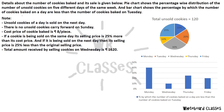What have you been told in this question? Details about the number of cookies baked and their sale is given. The pie chart shows the percentage-wise distribution of the number of unsold cookies on 5 different days of the same week. Here you have to know how many unsold cookies there are on Monday and Friday. The pie chart shows the percentage by which the number of cookies baked on a day are less than the number of cookies baked on Tuesday.